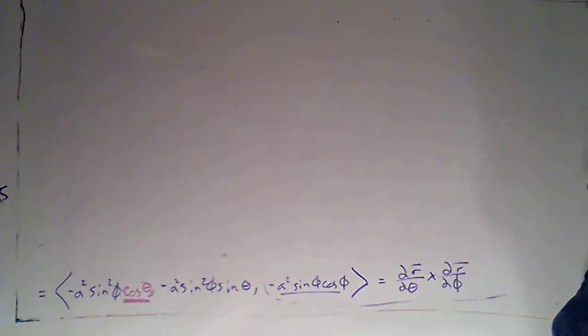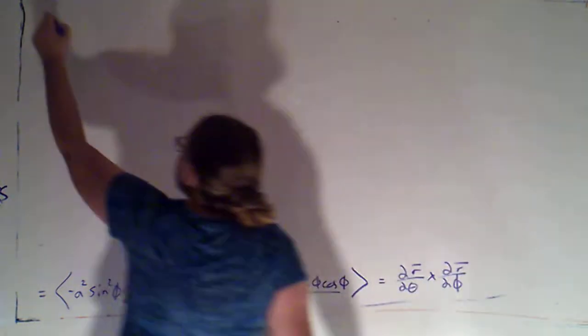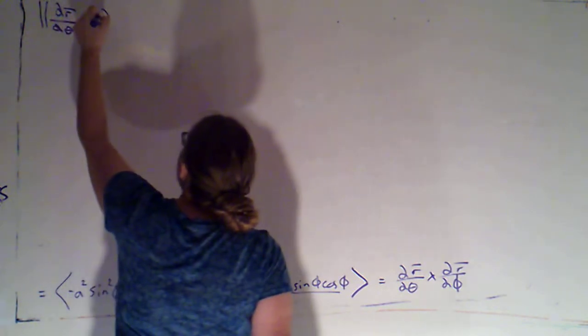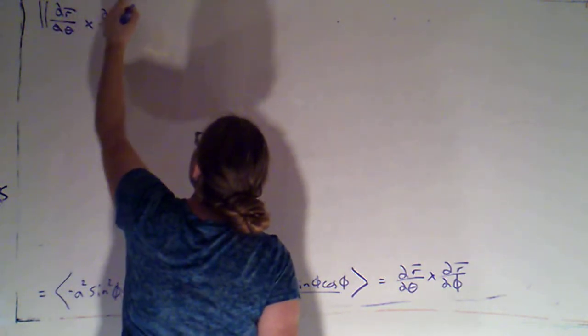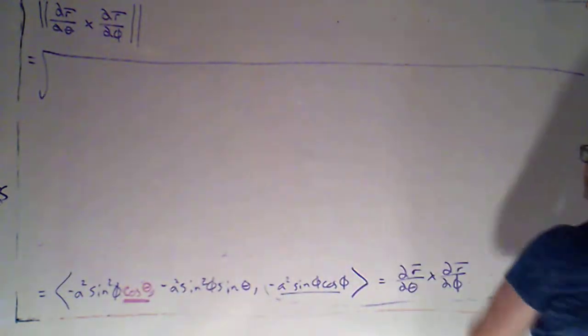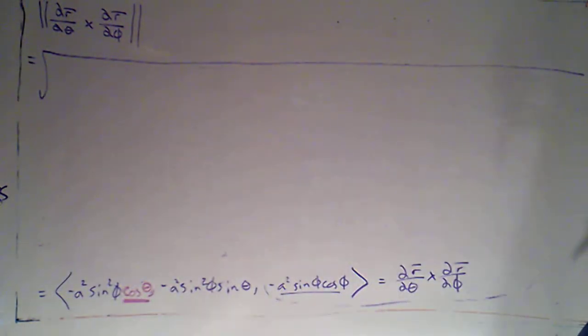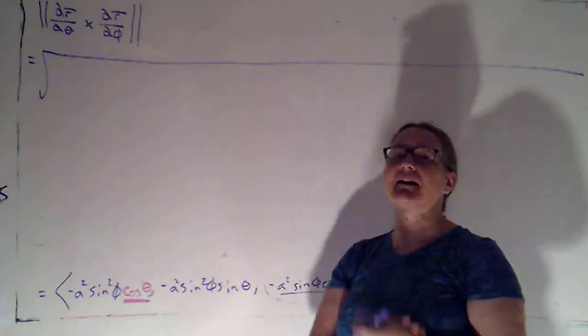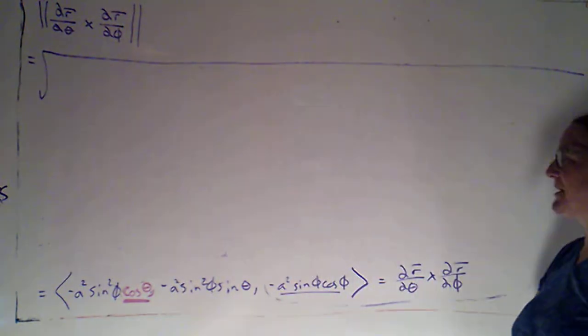Okay, so what we need to do is we need to take the magnitude of this. So we have the magnitude of del R del theta crossed with del R del phi, and that's going to equal the square root of something very very long. But what's going to happen is we're going to be able to simplify it and it's going to get much much shorter and much much simpler, so it's going to be really really realistic to integrate this.